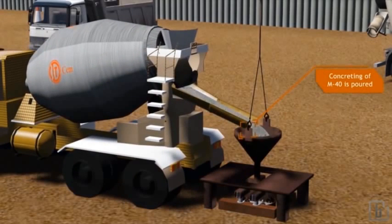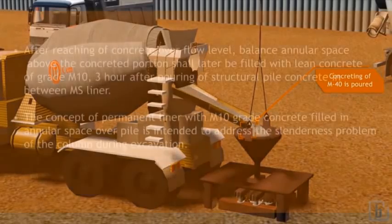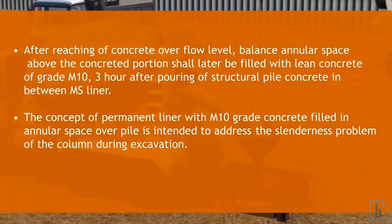The level of the concrete will be ascertained by lowering cup fitted with reinforcement steel. After reaching of concrete overflow level, balanced annular space above the concreted portion shall later be filled with lean concrete of grade M10.